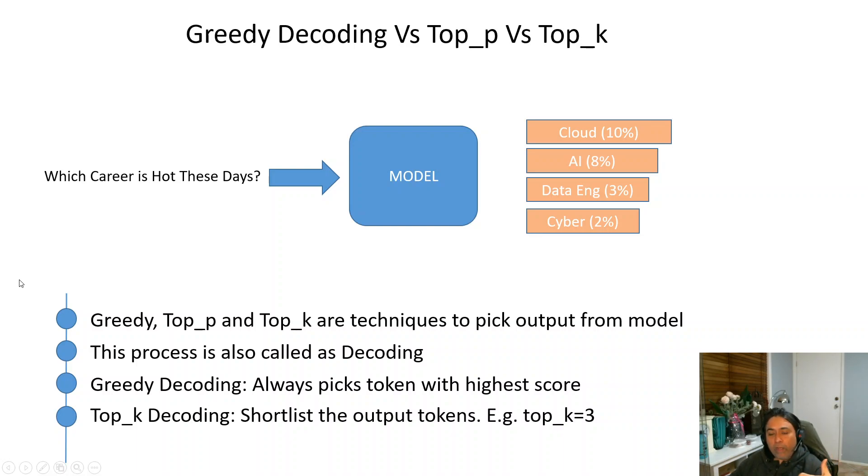For example, in our case, we have assigned top_k equals 3. So it will ignore the last one, cyber. It will just select the top three: cloud, AI, and data engineering. And then randomly it will return any of them to the end user.